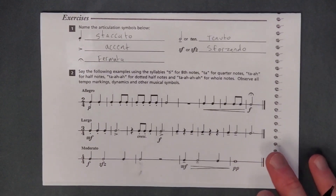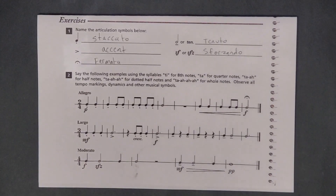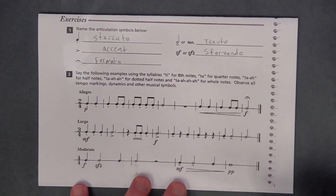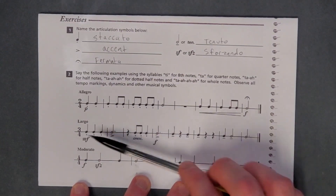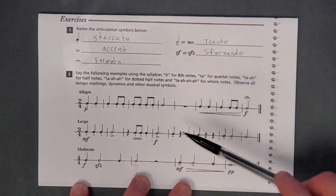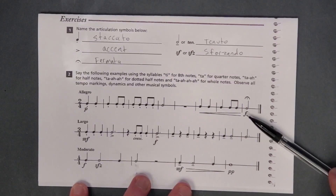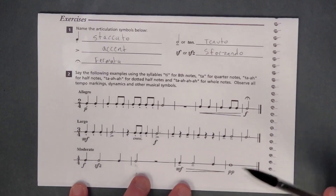Alright, so for number two: say the following examples using the syllables T for eighth notes, TA for quarter notes, TA for half notes, TA for dotted half notes, and TA for whole notes. Observe all tempo markings, dynamics, and other musical symbols. Remember staccato — these are nice short notes. We've got some staccato quarter notes, some staccato eighth notes, then a nice long half note, all done at piano so nice and quiet. Then we have regular notes leading to a fermata at the end, with a crescendo going from piano all the way up to forte. Let's give it a try.